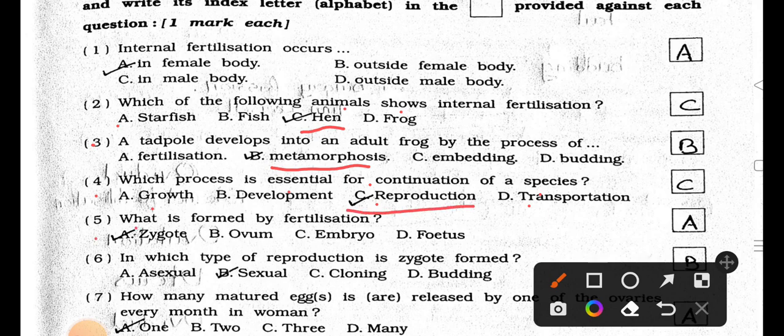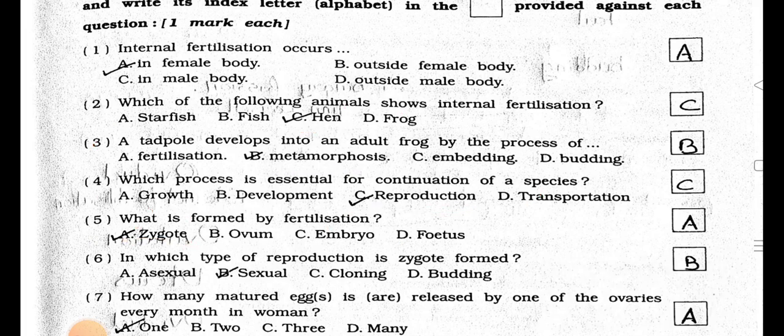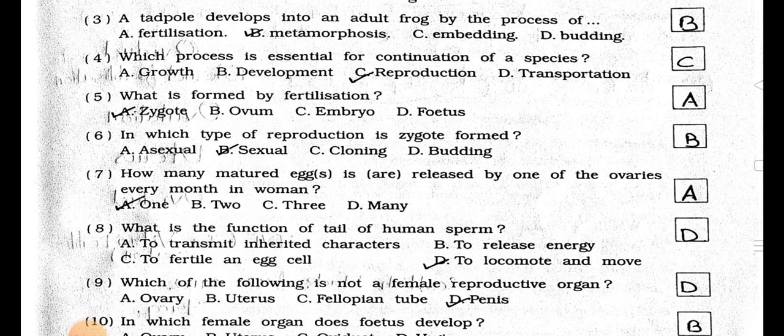Number 5. What is formed by fertilization? A. Zygote, B. Ovum, C. Embryo, and D. Fetus. Answer is Option A, Zygote.